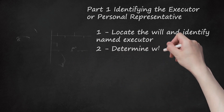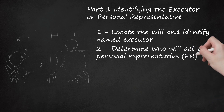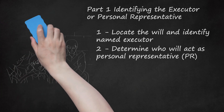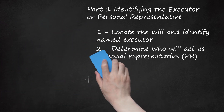Step 2: Determine who will act as personal representative (PR). A probate court may appoint a PR if there is no will or the executor named in the will refuses to serve. Before the court appoints a PR, family members may try to decide who they want. Generally, a spouse, child, parent, or sibling is chosen as PR. Note that people convicted of a felony might not be legally allowed to serve as PR. You can check your state's probate laws for any restrictions on PRs.